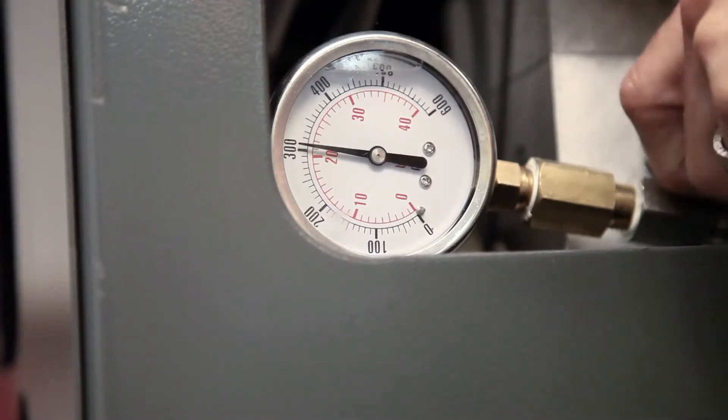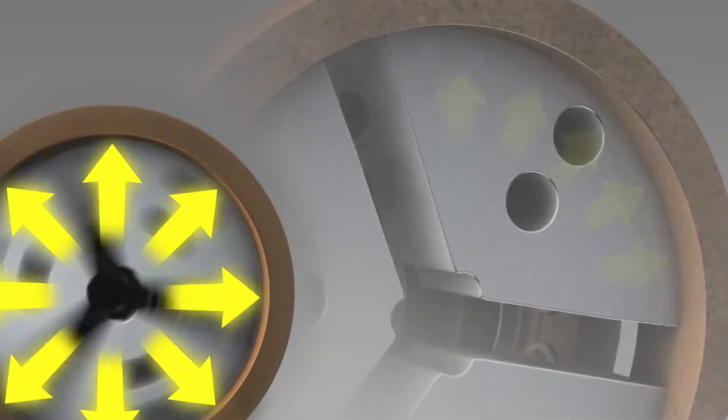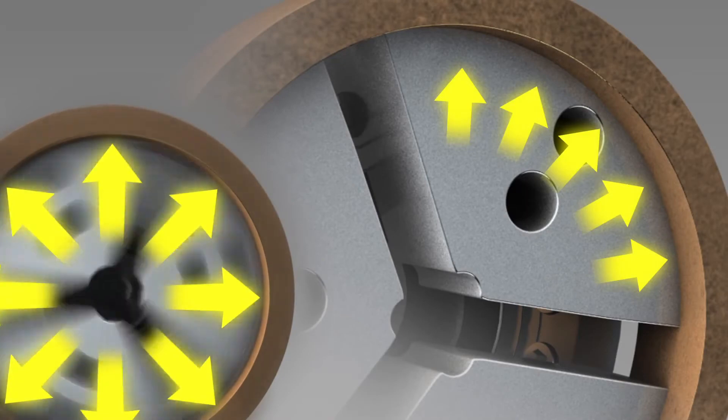Chuck pressure may need to be reduced to compensate for this added force. This is another reason to consider using pie jaws. With pie jaws, the additional centrifugal jaw pressure will be spread evenly over the internal surface of the part.